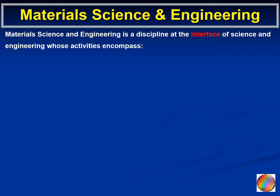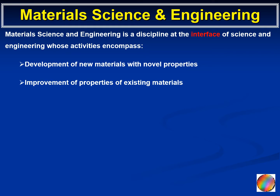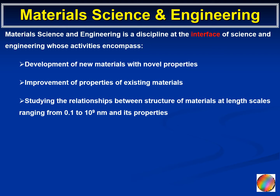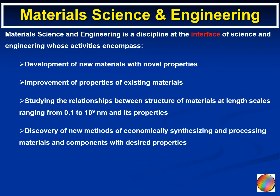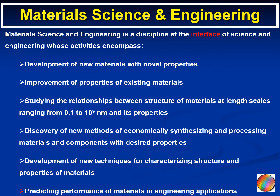Material science and engineering is a discipline at the interface of science and engineering whose activities include the development of new materials with novel properties, improvement of properties of existing materials, studying the relationships between structure of materials at length scales ranging from one nanometer to one meter. It also includes the discovery of new methods of economically synthesizing and processing materials and components with desired properties, as well as development of new techniques for characterizing the structure and properties of materials, and predicting the performance of materials in engineering applications.